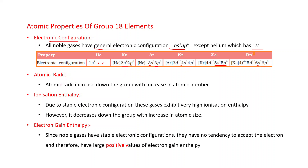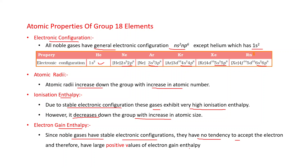Atomic radii increase down the group with increasing atomic number as the number of shells increases. Ionization enthalpy: due to stable electronic configuration, these gases exhibit very high ionization enthalpy; however, it decreases down the group with increasing atomic size. Electron gain enthalpy: since noble gases have stable electronic configurations, they have no tendency to accept electrons and therefore have large positive values of electron gain enthalpy.